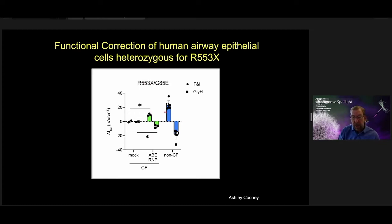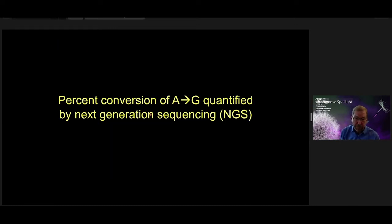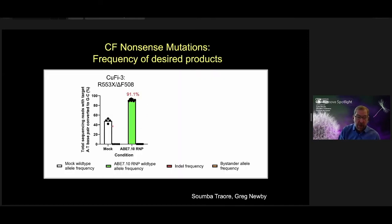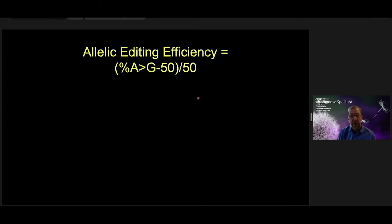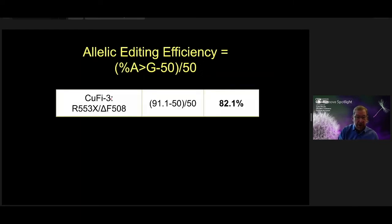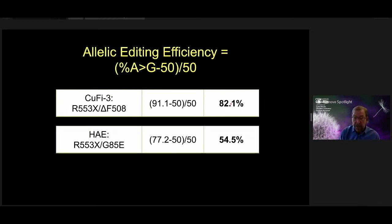After treatment with the adenine base editor, we see evidence of CFTR function — in multiple technical replicates, we see a clear range of correction compared to untreated controls, restoring CFTR anion transport. We also saw similar restoration in primary CF compound heterozygous cells. By sequencing, in the mock condition, 50% of alleles at that locus showed a GC pair (compound heterozygous). After ABE treatment, 91% showed GC pairs in the cell line and 77% in primary cells. Correcting for compound heterozygosity, 82% of mutant alleles were corrected in the cell line and just over 50% in primary cells.